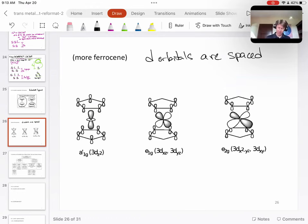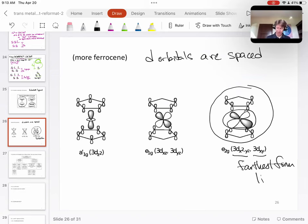we can look at a picture like this and see these two have orbitals like this, which are the dx squared minus y squared and the dxy. These ones are going to be farthest from the ligand.